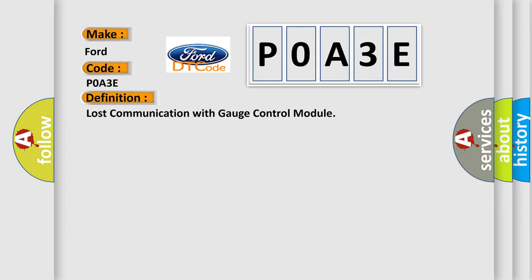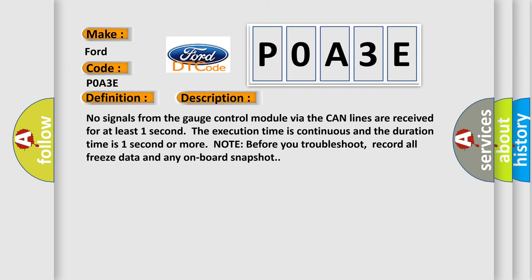And now this is a short description of this DTC code. No signals from the gauge control module via the CAN lines are received for at least one second. The execution time is continuous and the duration time is one second or more. Note: before you troubleshoot, record all freeze data and any onboard snapshot.